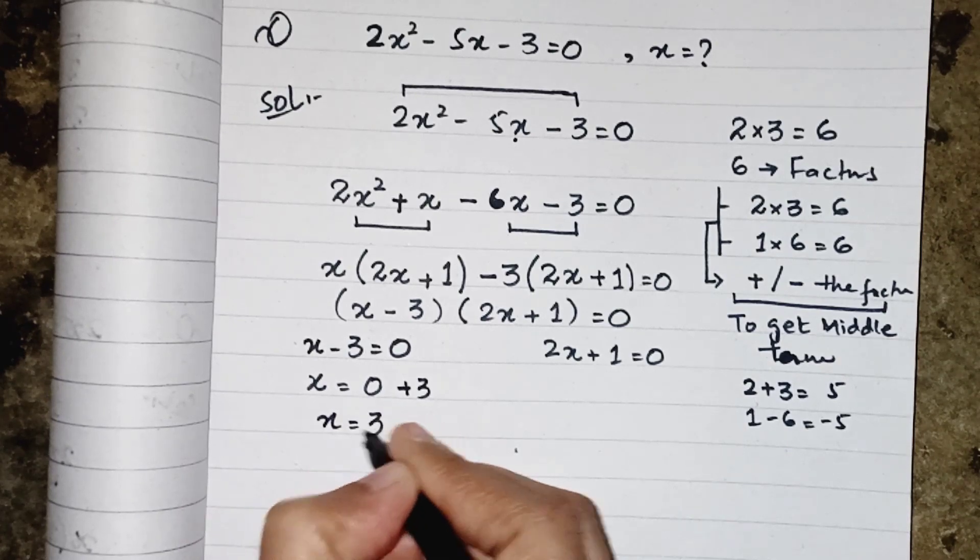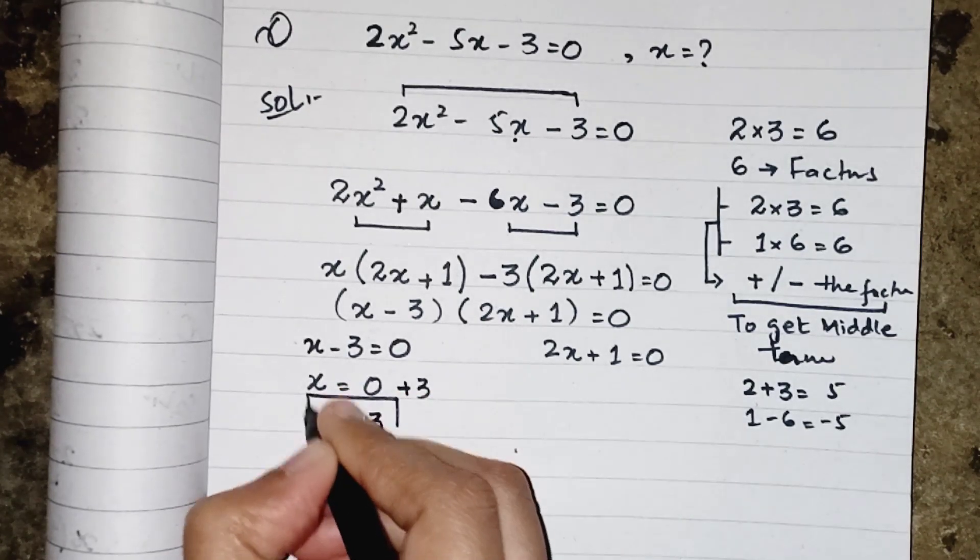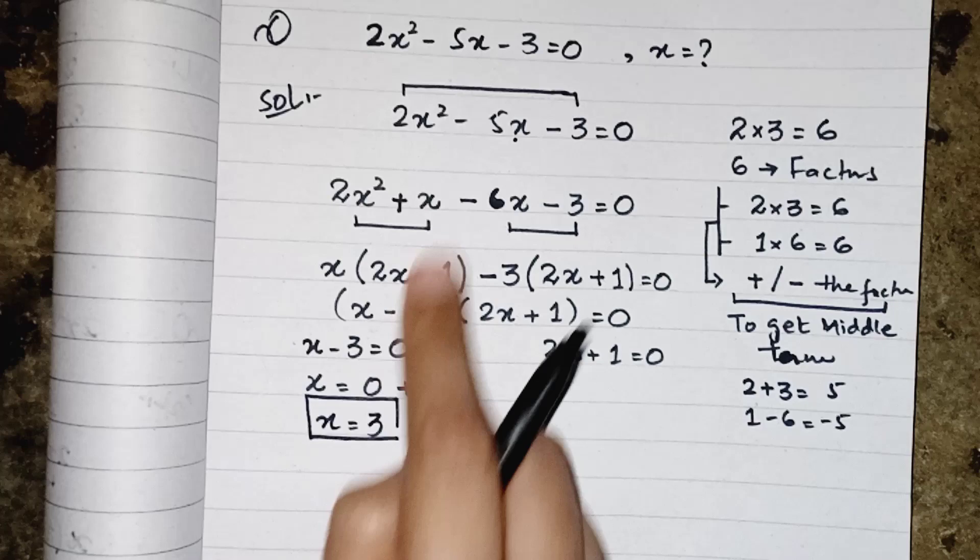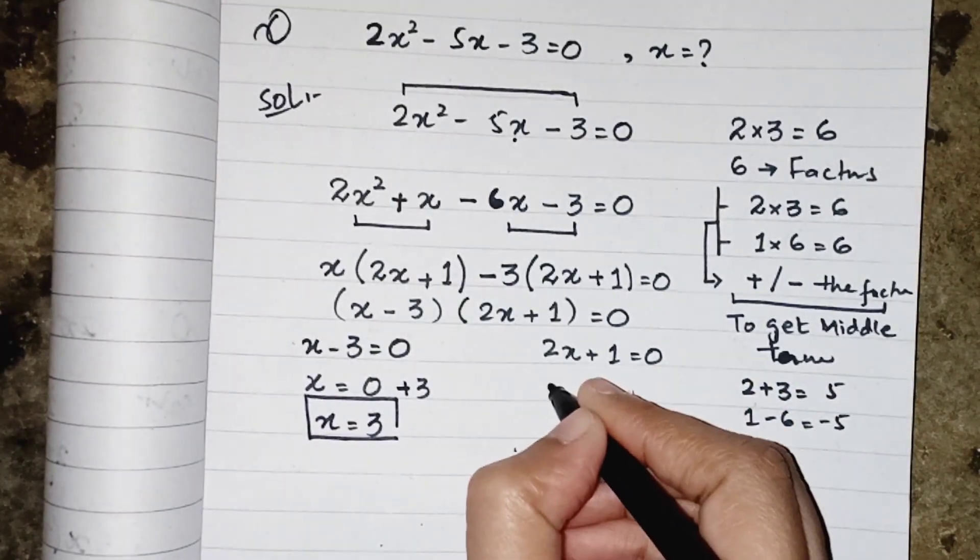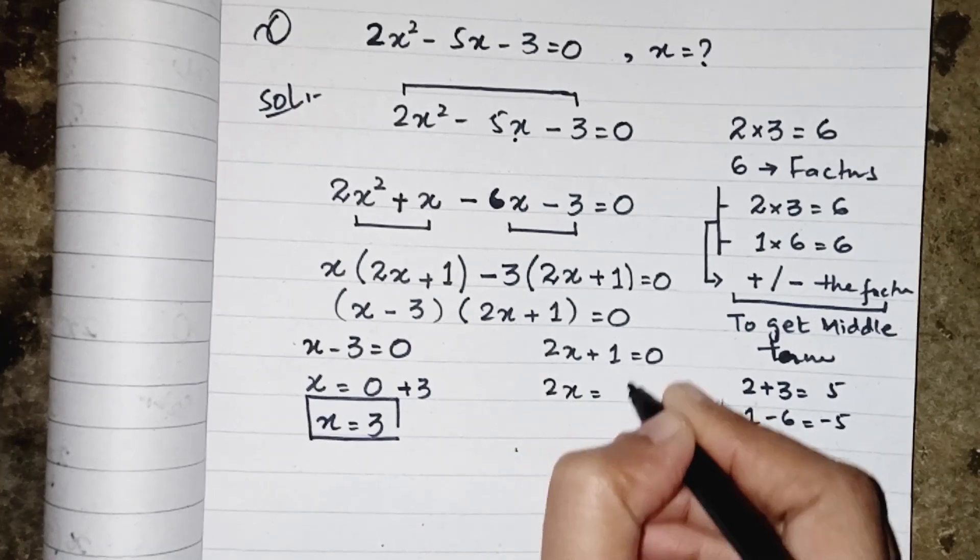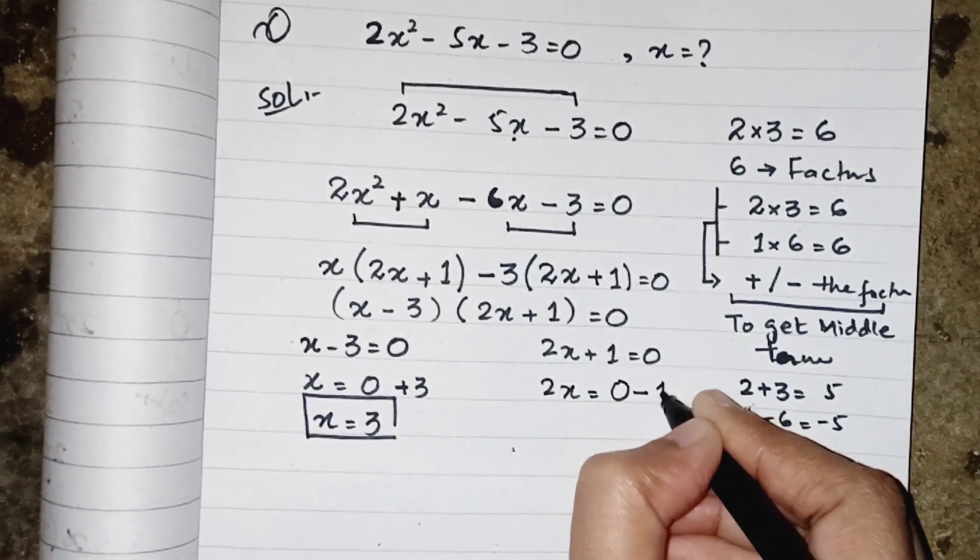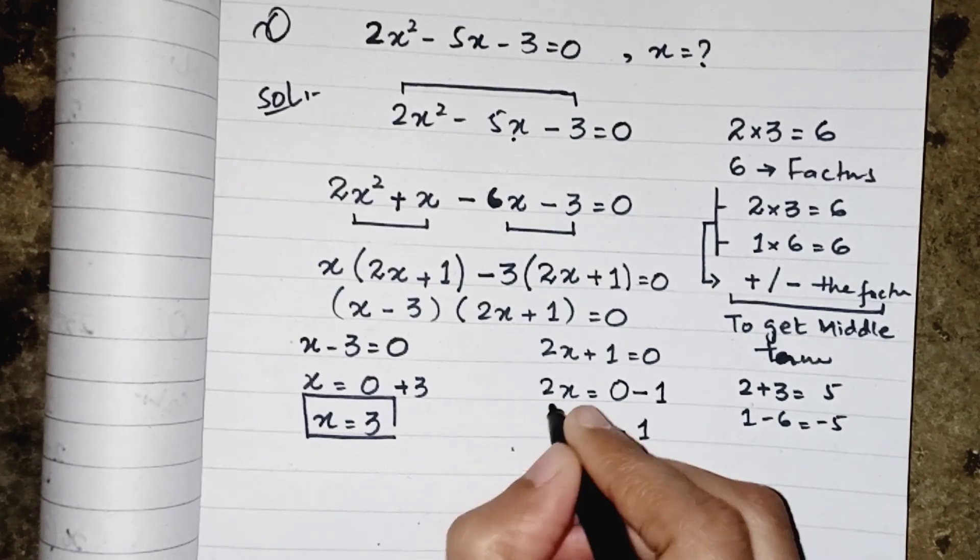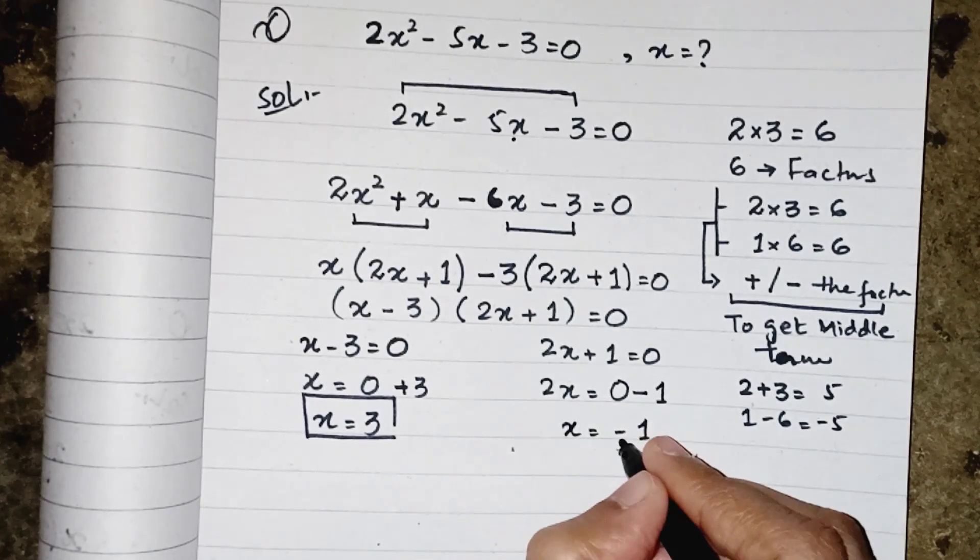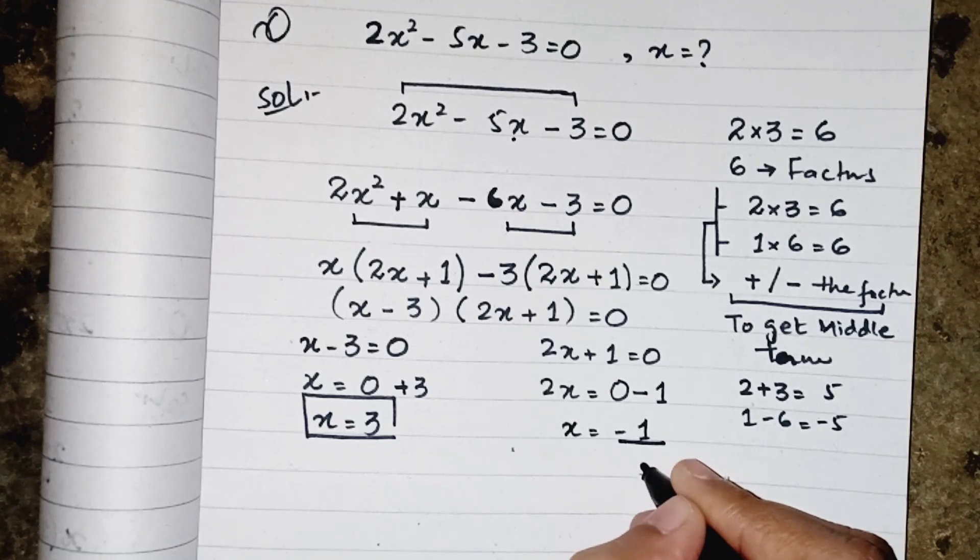Now over here, this minus 3 moves to that side, so it will be x equals to 3. We have one value of x. As the equation is quadratic equation, we will get two values of x. So for the other one, 2x equals 0, this one moves to that side, so it will be minus 1.